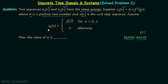Signal x2n is equal to square root of 1.5 for n equal to 0 and n equal to 1, and for all other values of n, x2n is equal to 0. Using these informations — that x1n and x2n have the same energy and knowing both signal definitions — we are required to find the value of the positive real number alpha.